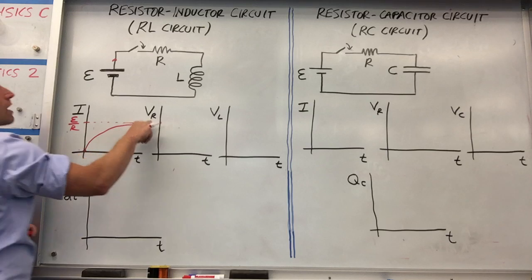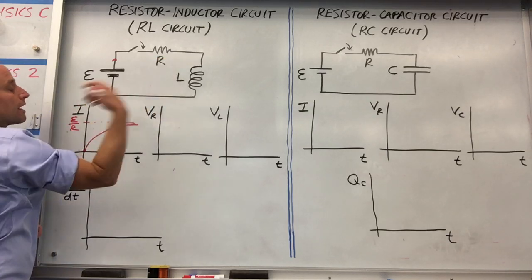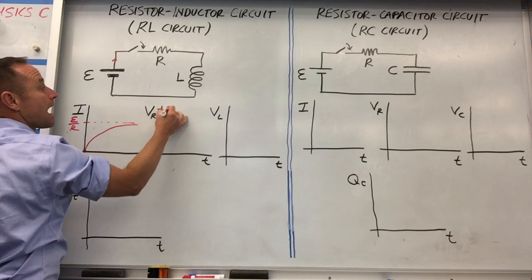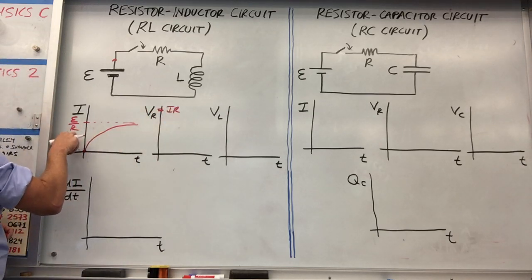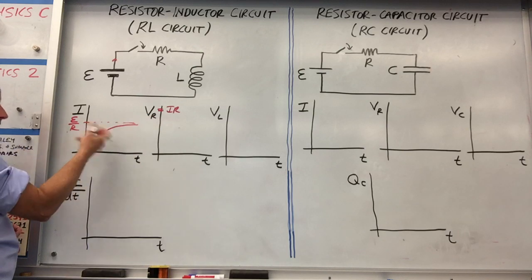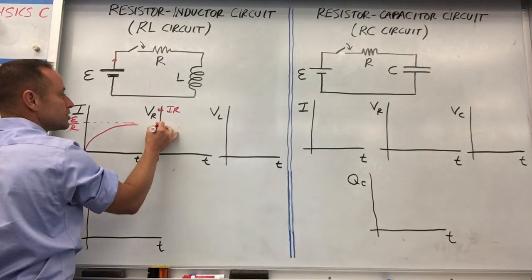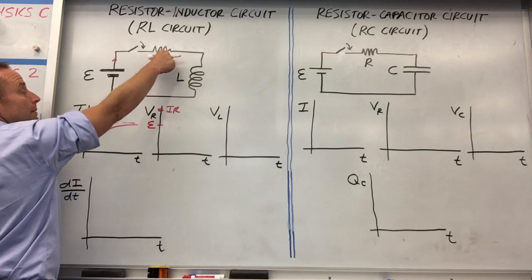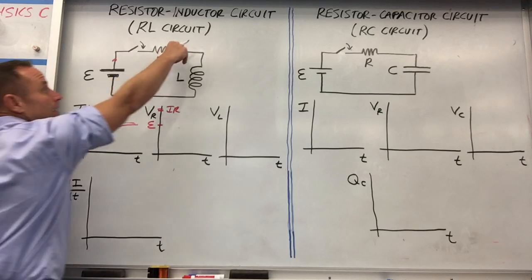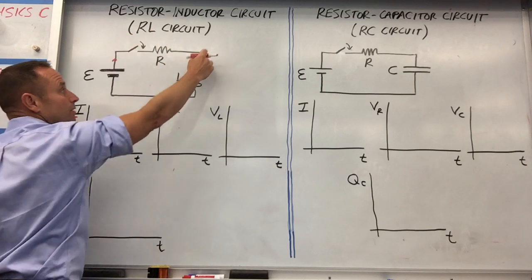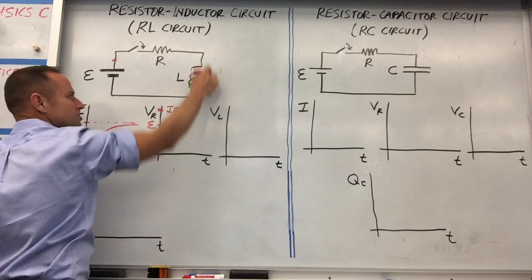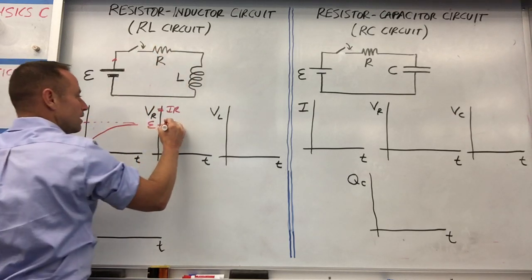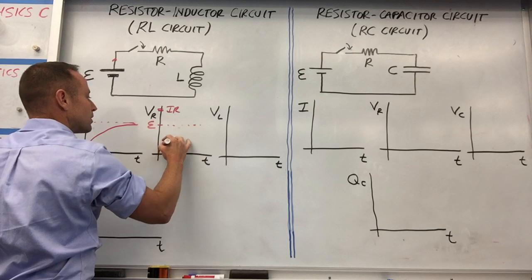If you look at the voltage drop across the resistor, using Ohm's Law, that's just I times R. So you just multiply this current graph by R. This voltage is going to build up eventually to the battery voltage being across the resistor. Eventually you just have a steady current with no voltage drop over the inductor — it's just a wire — so all the voltage drop will be across the resistor. It's an exponential approach.